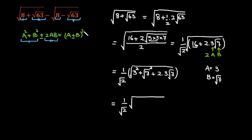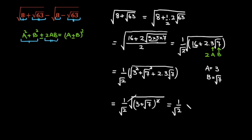Which is (a + b)² — so value of a is 3, giving us (3 + √7)². The square and the square root will eliminate, so this is equal to 1 over √2 inside the bracket: 3 plus √7. Now come back to our original expression.